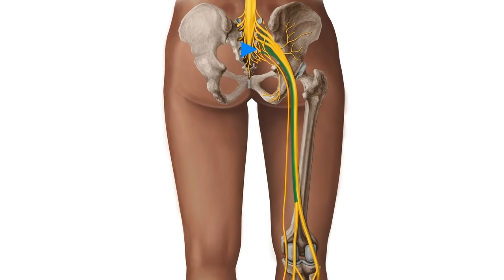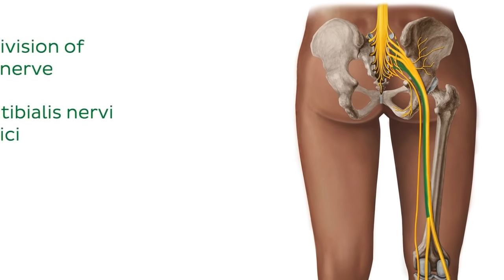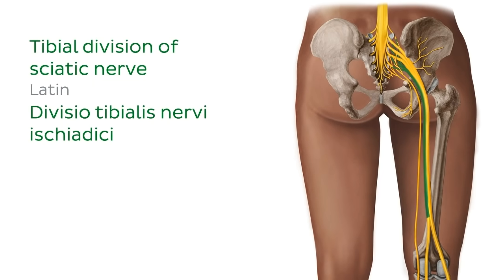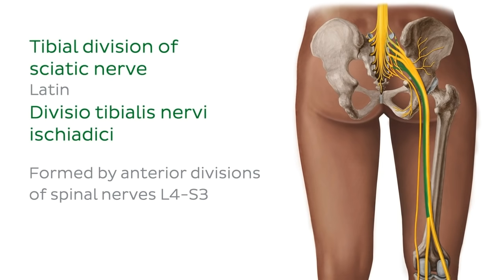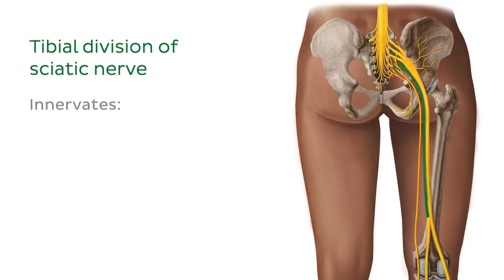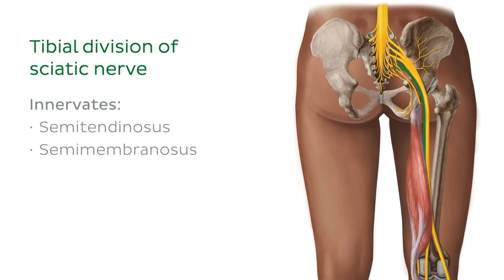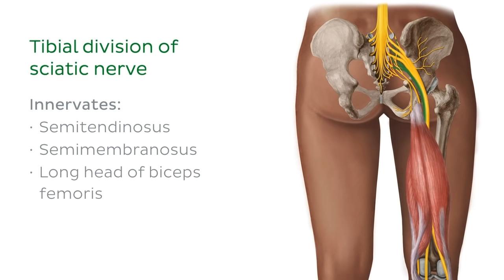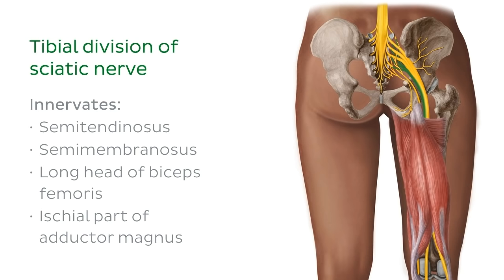We can see the tibial division of the sciatic nerve highlighted in green. The tibial division is formed by the anterior divisions of spinal nerves L4 to S3. The tibial division of the sciatic nerve innervates most muscles of the posterior compartment of the thigh, including the semitendinosus, the semimembranosus, and the long head of the biceps femoris. It also innervates the ischial part of the adductor magnus, which is a muscle of the medial compartment of the thigh.